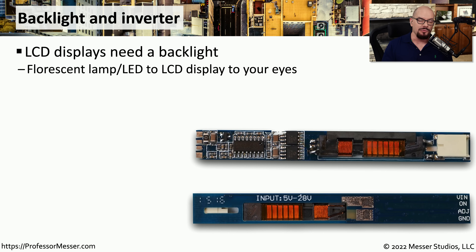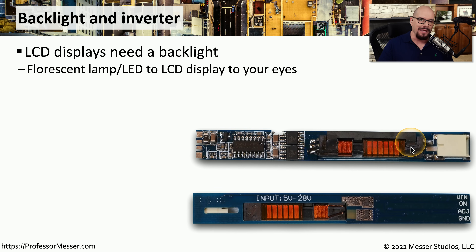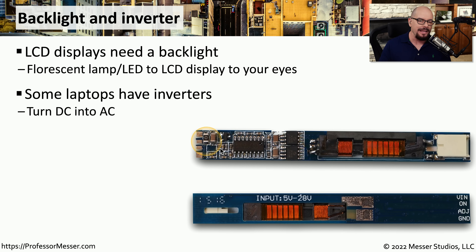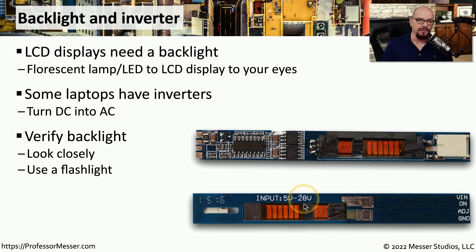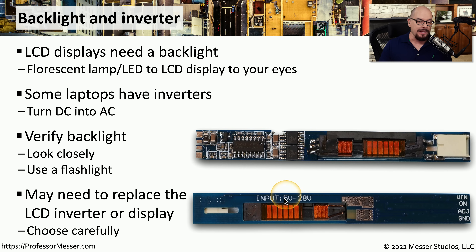If you're working on an older laptop with CCFL fluorescent backlights, you may find additional components behind the screen called inverters. We use inverters because the CCFL backlight requires AC power, but the laptop uses DC power. The inverters take that DC power and convert it to AC to power the fluorescent backlights. One way to tell if your backlight has failed is to shine a flashlight directly at the screen — if you can make out information on the screen, the problem may be with the backlight, not the display itself. If it's a CCFL backlight, you may just need to replace the inverters. On some systems, you may have to replace the entire display; check your laptop's documentation for your specific model.